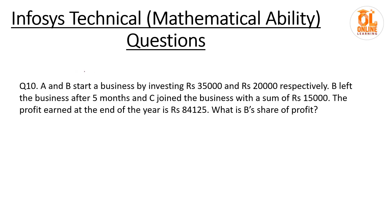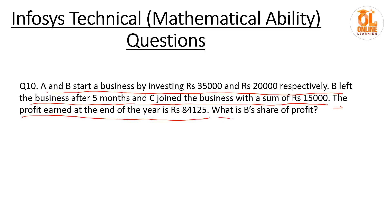The last question is on partnership. A and B start a business investing ₹35,000 and ₹20,000 respectively. B left after 5 months and C joined with ₹15,000. The profit at year end is ₹84,125. What is B's share of profit? First find each person's investment × time: A = 35,000×12.